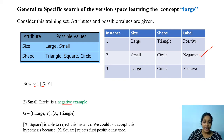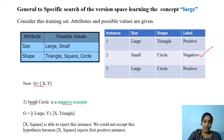G accepts this instance too as positive, so we have to make some specialization. X is getting matched with 'small,' so we take a specialization on x. The other possible value of x is 'large,' giving us hypothesis {large, y}.